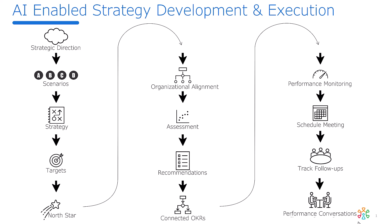What you're looking at is a rough map of what that strategy creation to execution cycle looks like, where we start off with strategy development through creating that top-level OKRs — the North Star — doing that organization alignment, what some people call cascade or connection down the organization, and from there into performance monitoring, appropriate performance meetings, follow-ups and one-on-one performance conversations.